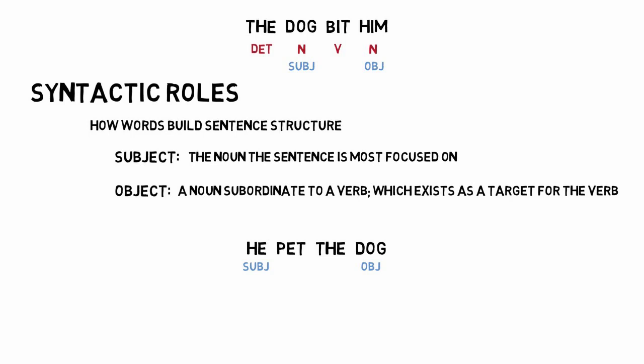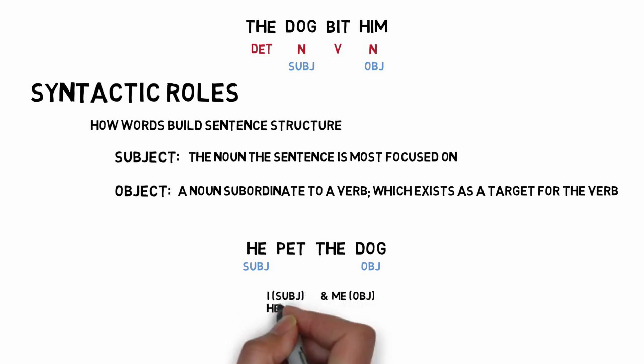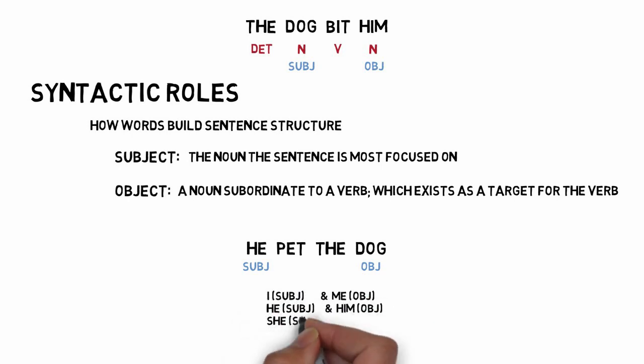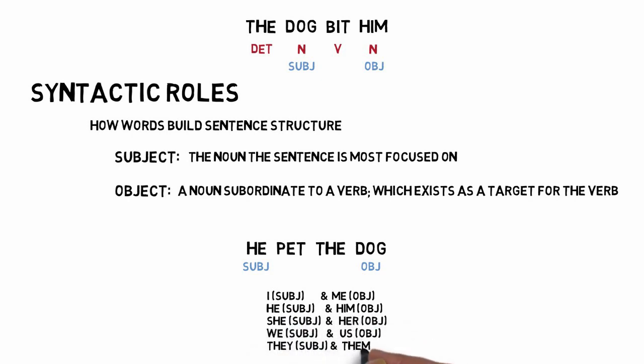In English, only pronouns change form based on syntactic role: I vs. me, he vs. him, she vs. her, we vs. us, and they vs. them. Because this only happens in a few words, English relies on word order to tell us what the subject or object is in a sentence.